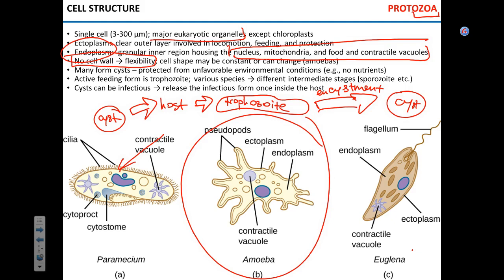The trophozoite form can feed and replicate; the cyst form cannot replicate or feed.